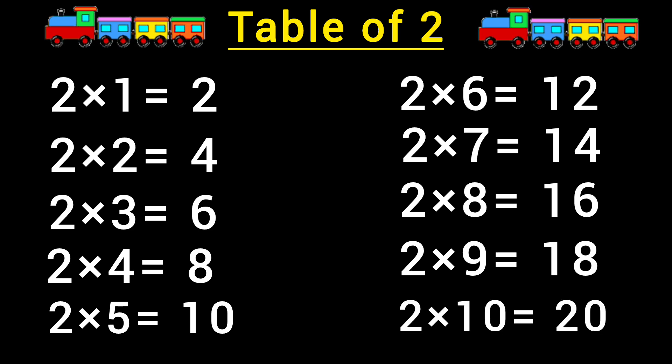Two tens are twenty. Let's repeat again. Two ones are two, two twos are four, two threes are six, two fours are eight, two fives are ten, two sixes are twelve, two sevens are fourteen, two eights are sixteen.